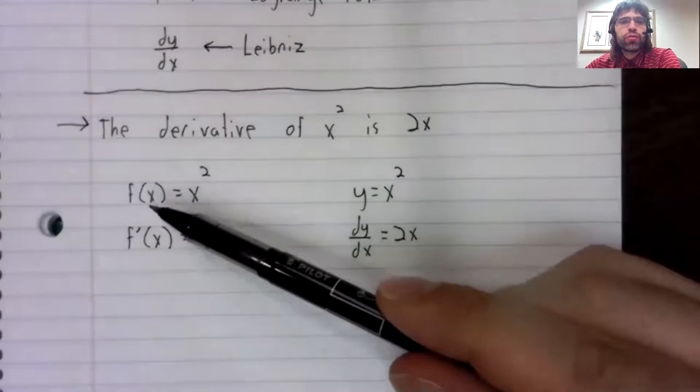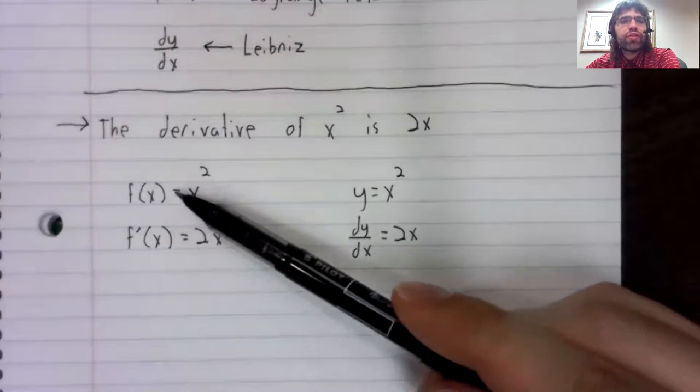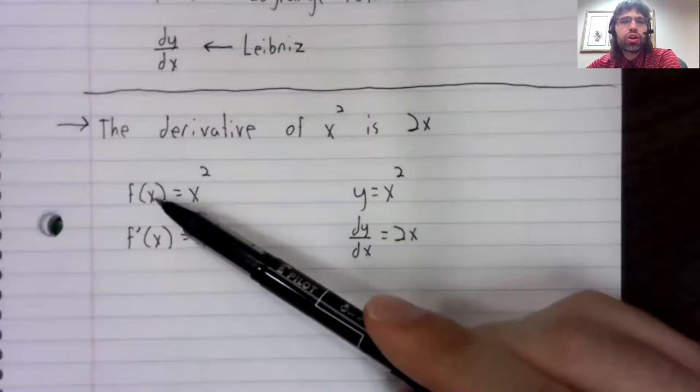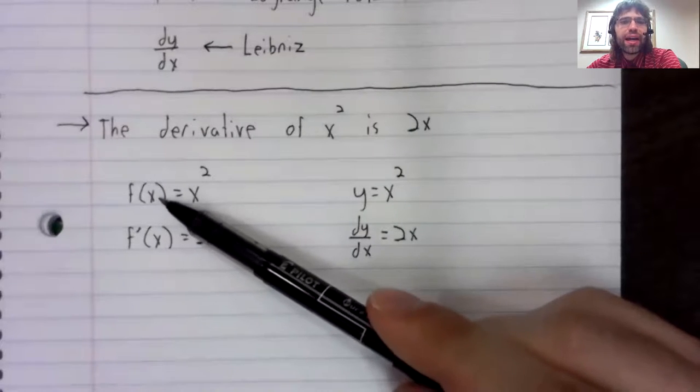To use the Lagrange notation, we had to first give x squared a name. We had to call it f of x.